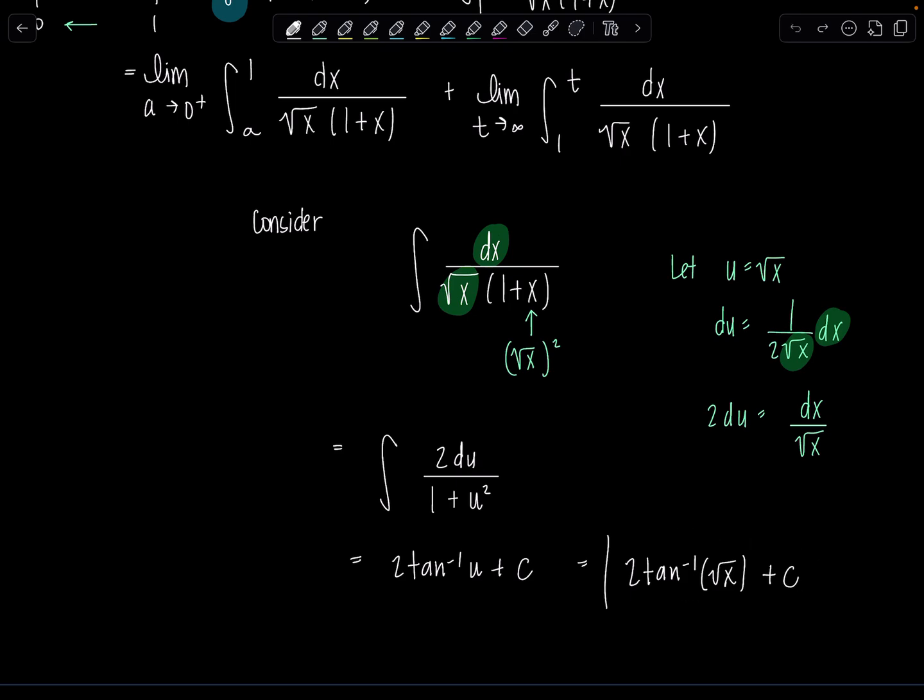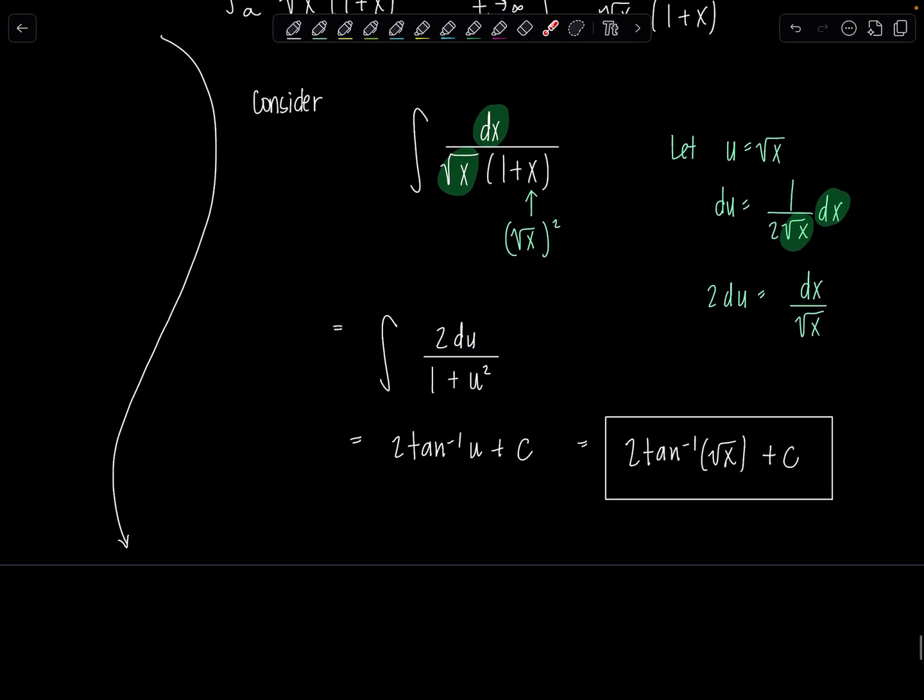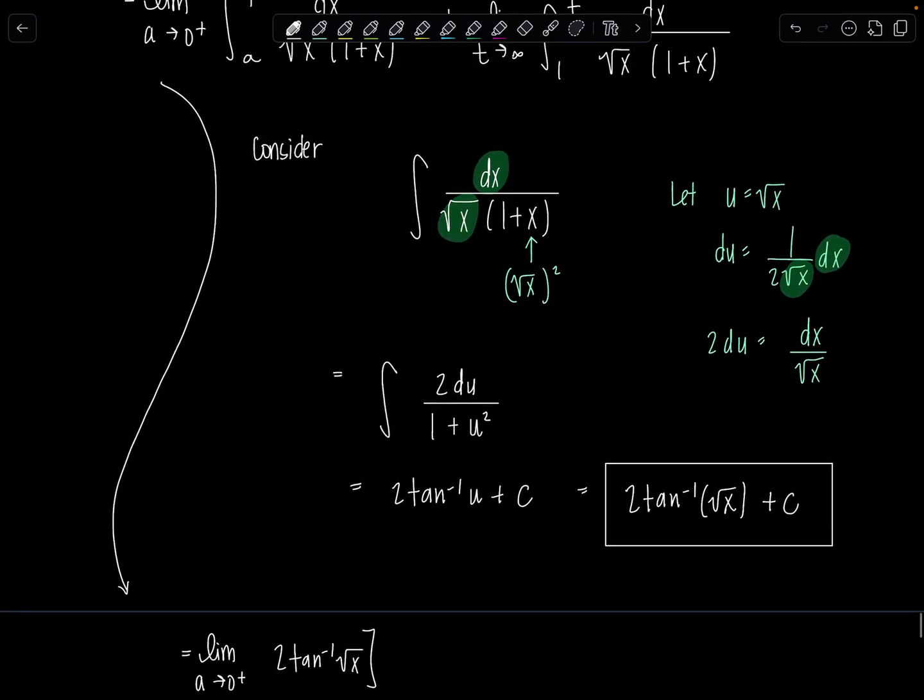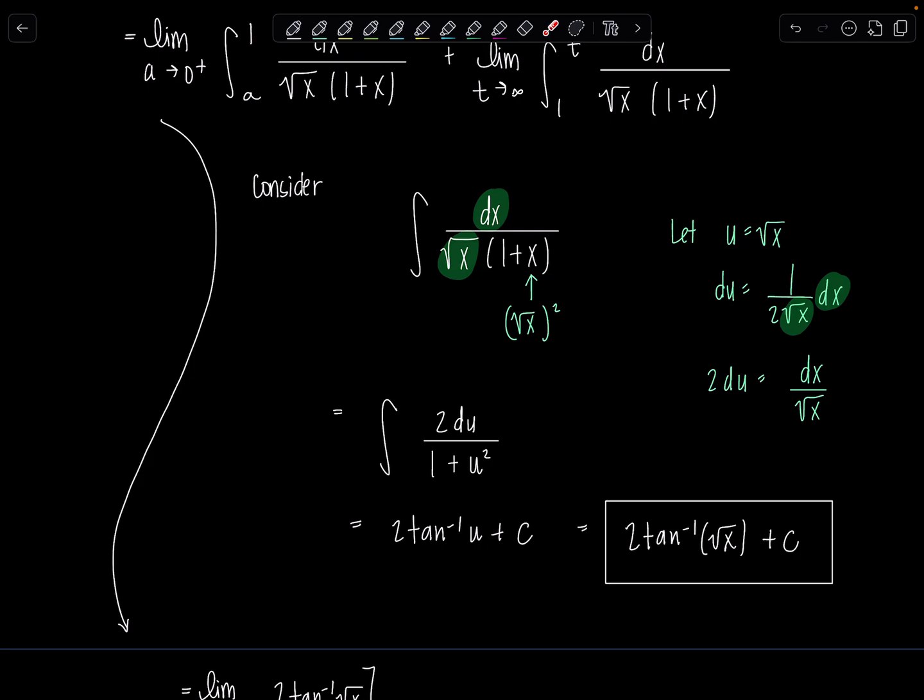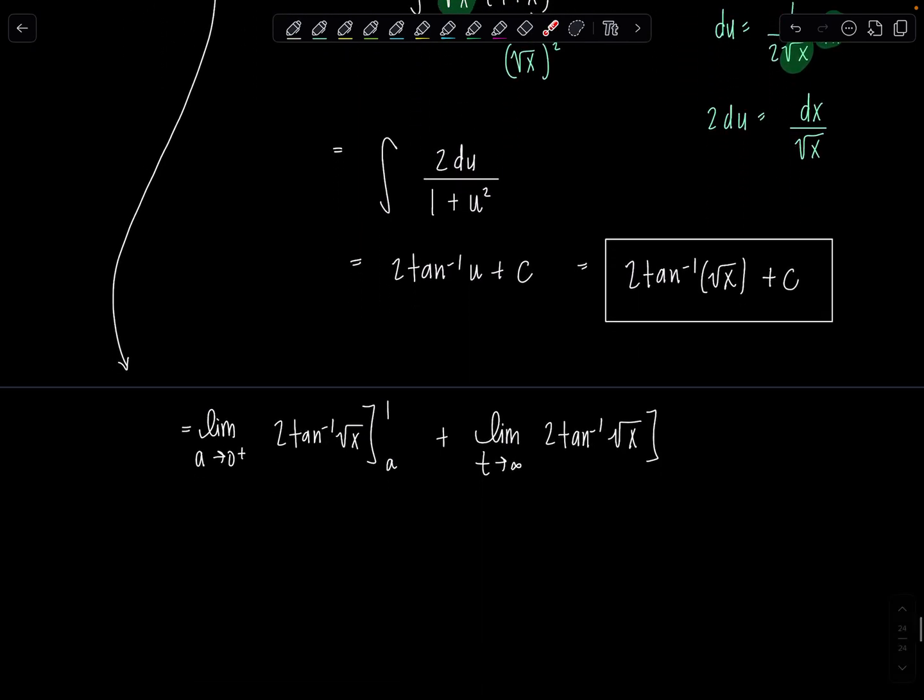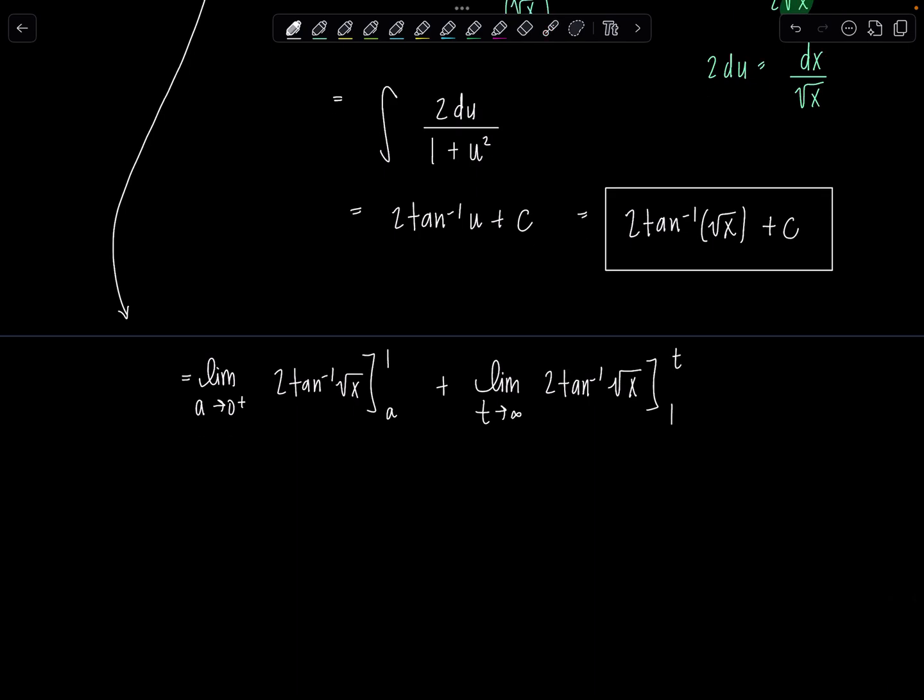So two tan inverse of rad x plus C. So now we can just come in, pick up where we left off with our limits. But instead of writing out this integral, I'm just going to replace it with the antiderivative. No plus C. I'm just going to have the limits on the right from a to one.